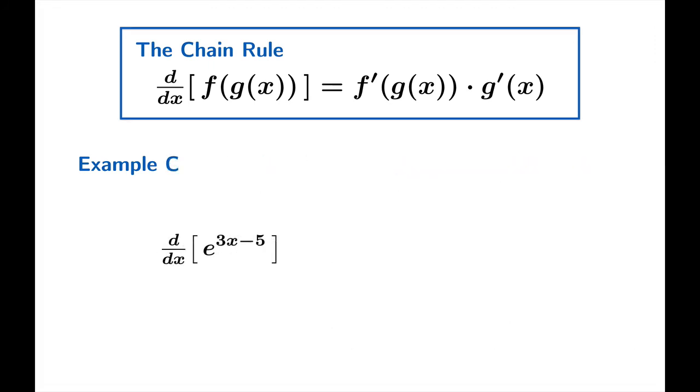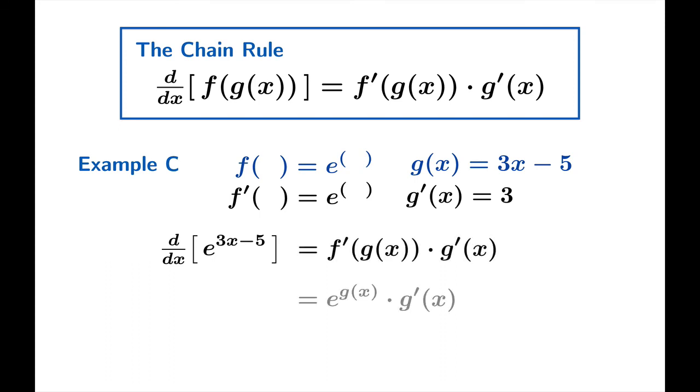So let's look at one more example. What's the derivative of e raised to the 3x minus 5? If we think of the outer function as the exponential function base e and the inner function as the simple linear function 3x minus 5, then we have realized the target function as a composite. The derivative of e to the whatever is e to the whatever and 3x minus 5 has derivative simply 3. So in this case, the chain rule tells us that our derivative should be e raised to the g of x times g prime of x, which is simply e raised to the 3x minus 5 times 3, which we would probably write this way.